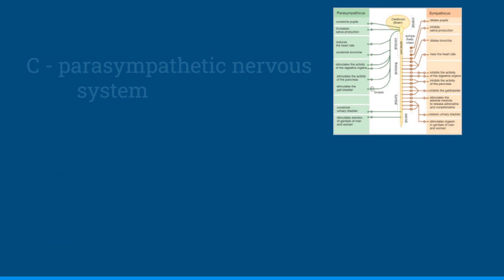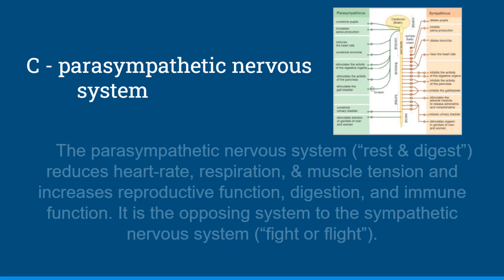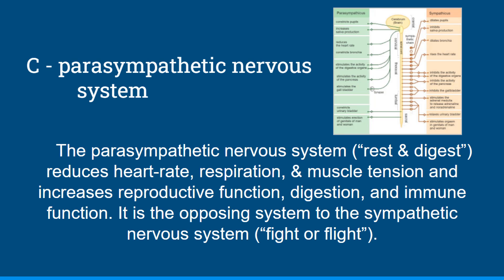These changes are due to activity of the parasympathetic nervous system. The parasympathetic nervous system — which you can remember with the phrase 'rest and digest' — reduces heart rate, respiration, and muscle tension, and increases reproductive function, digestion, and immune function. It is the opposing system to the sympathetic nervous system, which is associated with the fight-or-flight response.